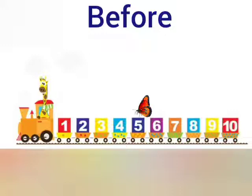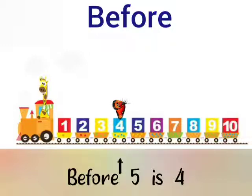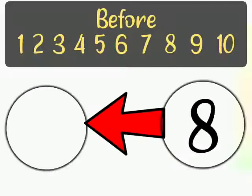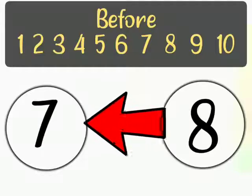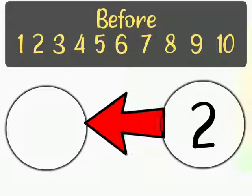Now the butterfly is on number 5. Children, tell me which number will you get when the butterfly jumps before 5. That's right, before 5 is 4. Can you tell me the number before 8? You are right, before 8 is 7.